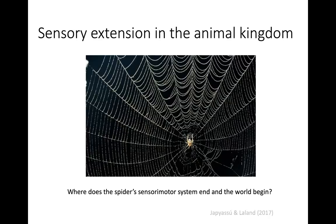One of my favorite examples is spiders and their webs. You might think that spiders just sit there passively waiting for prey to hit the web. But in fact, this is a very active system — the spider is plucking and pulling on the strings, which allows it to better tune into the vibrations of its web to actively sense when prey has caught it. I would argue the sensory motor system here should also include the web being actively used for sensing.